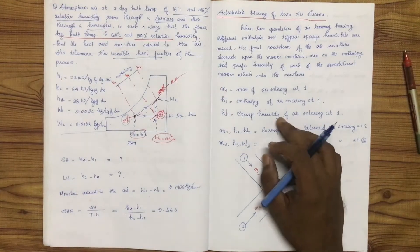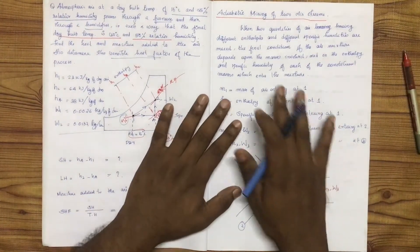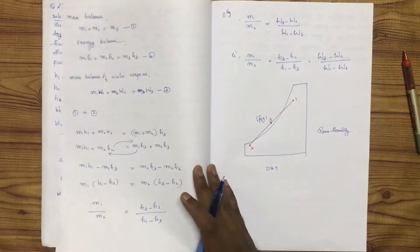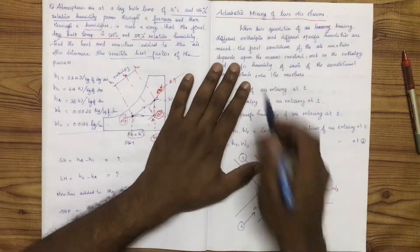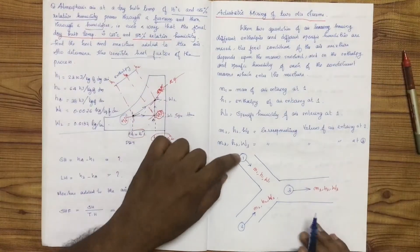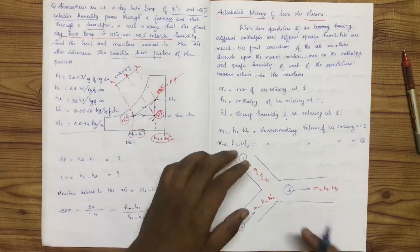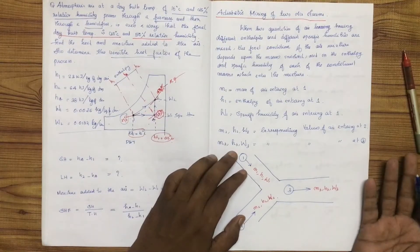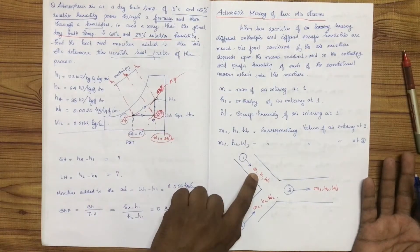Welcome to the mixing of two airstreams. The mixing of two airstreams involves the circulating of three airstreams. Once an airstream is divided, we consider three separate streams for analysis.